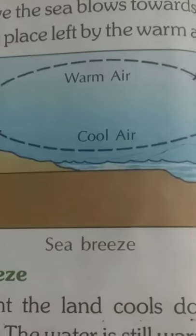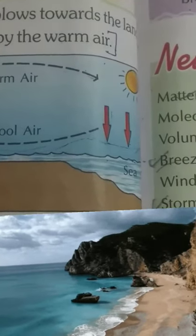Then we discussed how wind blows. When air gets warm due to sunlight it becomes lighter and moves upward. At the upper atmosphere it becomes cool, and the cooler air comes down to occupy the empty space. In this way wind is blowing on the earth.